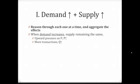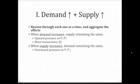Now let's look at what happens if nothing happens to demand but supply increases. When supply increases, demand remaining the same, the higher supply puts a downward pressure on price. As a result of this alone, equilibrium price would be expected to go down. The higher supply is expected to result in more transactions, so this by itself is expected to result in higher equilibrium quantity.